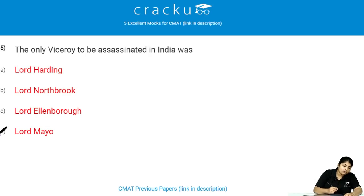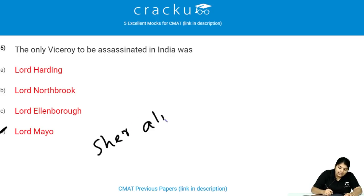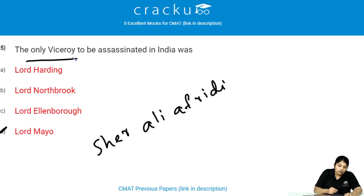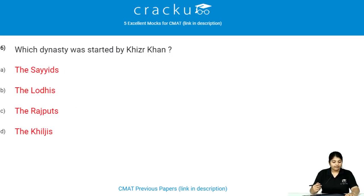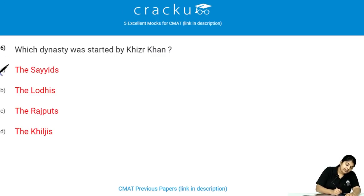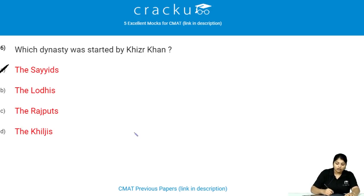Sher Ali Afridi was known to have killed Viceroy Lord Mayo in the year 1872. Which dynasty was started by Khizr Khan? The dynasty started by Khizr Khan is the Sayyid dynasty. He took over Delhi and a small surrounding area after the death of Tughlaq in the year 1413, thereby founding the Sayyid dynasty.